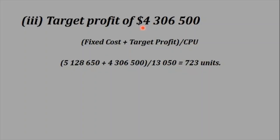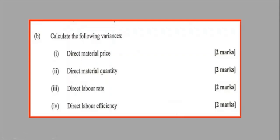Those 723 units are the target we need to sell in order to make this amount of profit. Any target you want to set, you just take it and add it onto the fixed cost and divide it by the contribution per unit, and you will get the target number of units.